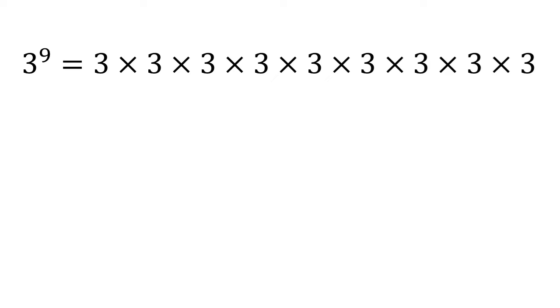What we're going to do is use our rules of indices. We can see that 3 to the power of 9 is 3 to the power of 4 times by another 3 to the power of 4 times by 3 to the 1. This works because 4 plus 4 plus 1 is equal to 9. This is going to make our method a lot easier.